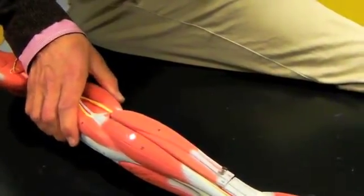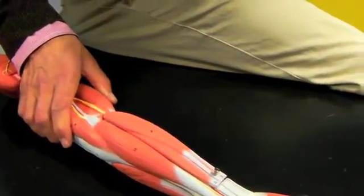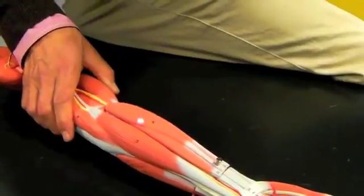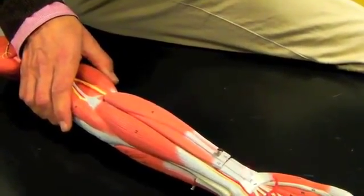This is part two of the arm. We're moving down to the forearm. First, we look at the anterior muscles of the forearm. These are called the flexors because they flex the wrist.